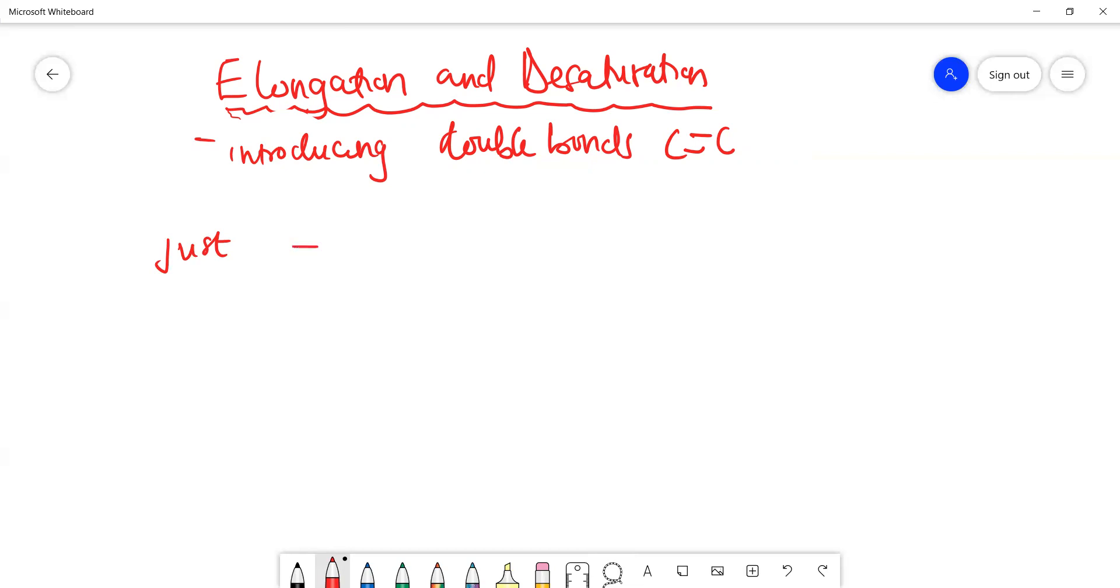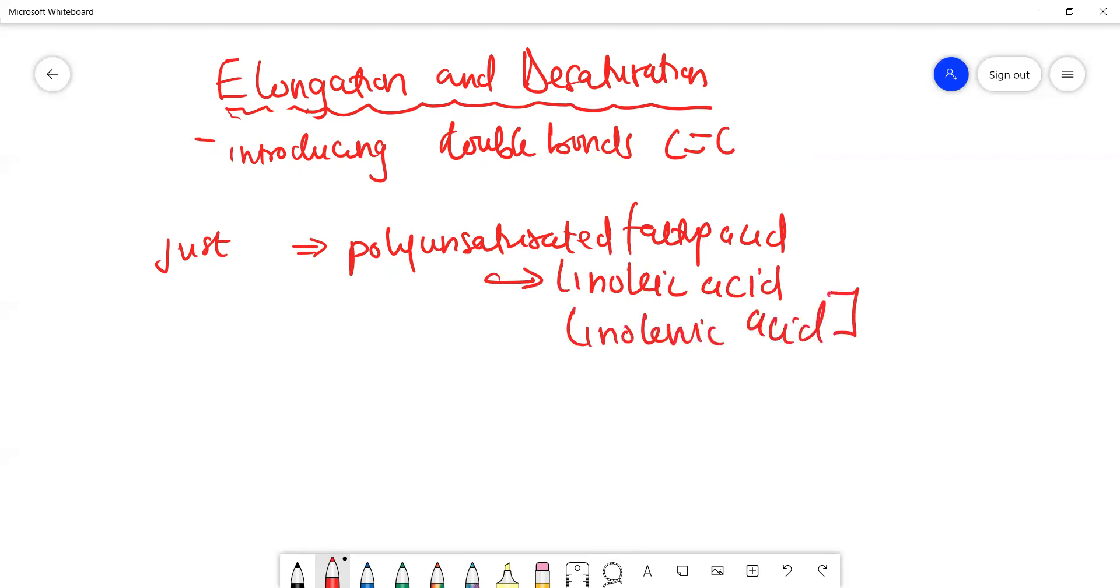Now, if you want the body to form a polyunsaturated fatty acid, then substrates are needed from the diet, from external sources. You need linoleic acid or linolenic acid. These two are precursors to formation of polyunsaturated fatty acids.